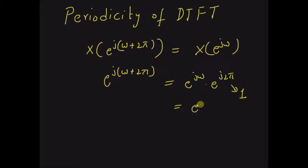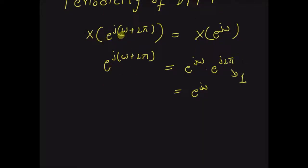Therefore, this is equal to e^jω. So the discrete time Fourier transform is a periodic function with a period equal to 2π.